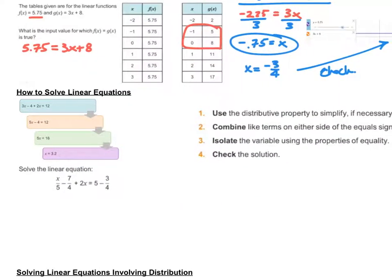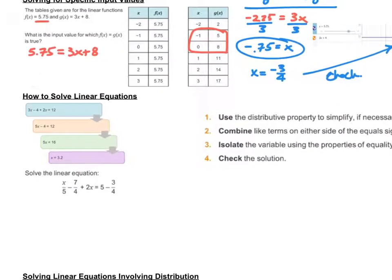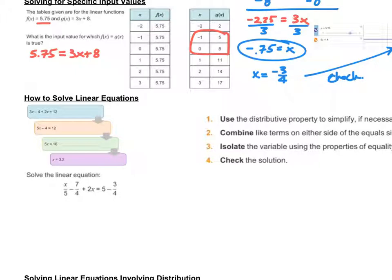Let's look at the steps to solve equations: use the distributive property to simplify, combine like terms — this is really important — isolate the variable by putting it on one side, and then check your solution.